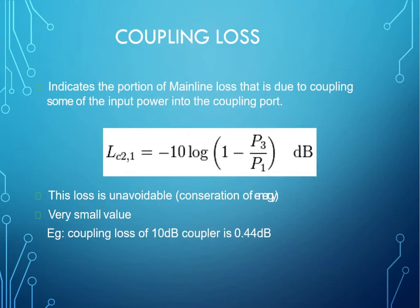Next is coupling loss. Coupling loss indicates the portion of mainline loss that is due to coupling of some input power into the coupling port. This loss is unavoidable due to conservation of energy.